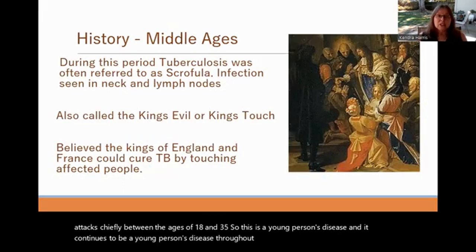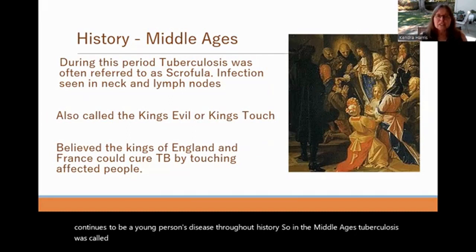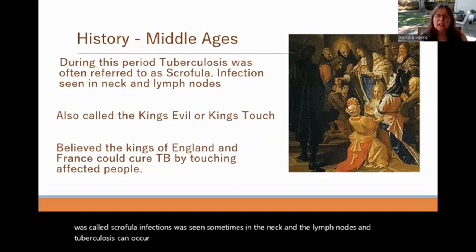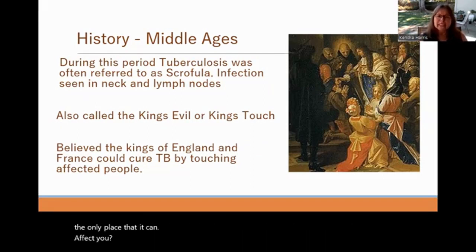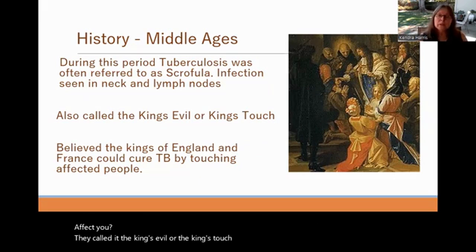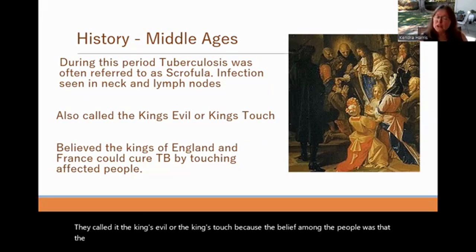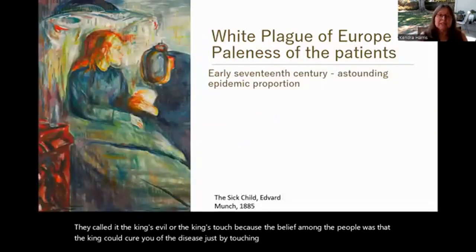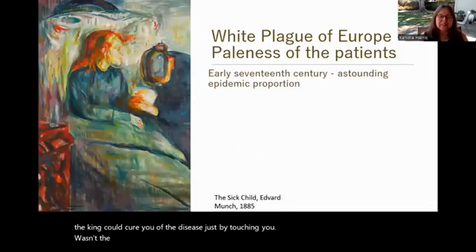In the Middle Ages, tuberculosis was called scrofula. Infections were sometimes seen in the neck and the lymph nodes. Tuberculosis can occur in many places — primarily it infects the lungs, but not exclusively. It was also called the king's evil or the king's touch, because people believed the king could cure you of the disease just by touching you. It wasn't the case, but it's nice to believe these things.